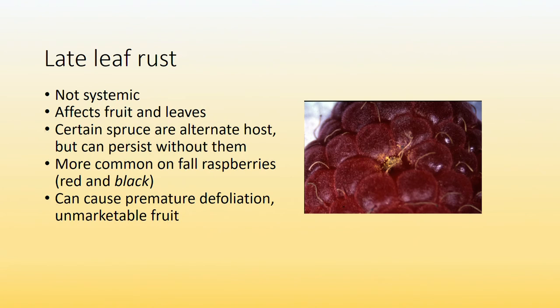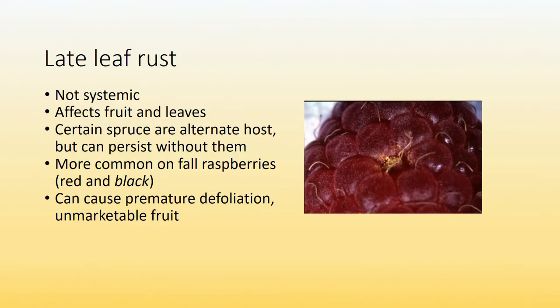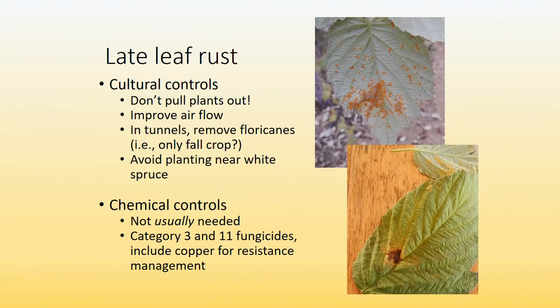Leaf rust: first of all, it's not systemic. It affects fruit and leaves. Certain spruces are alternative hosts, but it can persist without them. It's more common on raspberries, and it can cause premature defoliation resulting in unmarketable fruit. For cultural control, do not pull the plants out because it's not a systemic disease — you want to keep the plants. Improve airflow in tunnels, remove flooring canes, and avoid planting near white spruce, which is an alternative host. Chemical control is typically not needed, but FRAC 3 and FRAC 11 — DMI and strobilurins — are pretty effective. You want to include copper for resistance management.